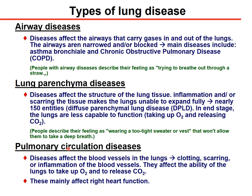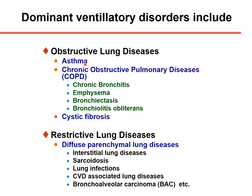Another important part of respiration involves the pulmonary circulation. When affected by disease, vessels in the lungs may be affected by clotting, scarring, or inflammation, impairing the ability of the lungs to take up oxygen and release carbon dioxide. These diseases mainly affect right heart function and later left heart function. Dominant ventilatory disorders include obstructive diseases such as asthma, COPD — chronic bronchitis, emphysema, bronchiectasia, bronchiolitis obliterans, and cystic fibrosis — and restrictive diseases affecting the parenchyma, such as interstitial lung disease, sarcoidosis, pneumonia, and carcinoma.